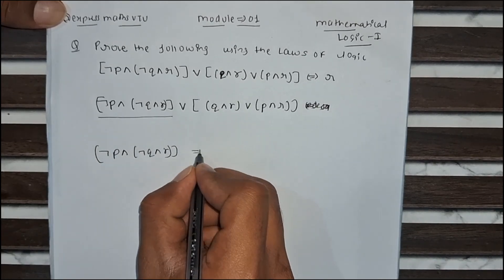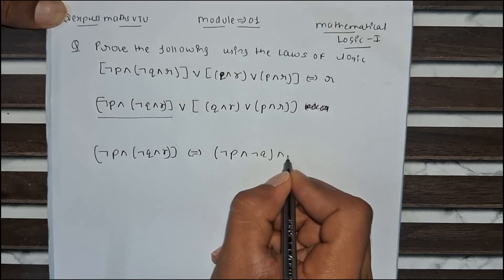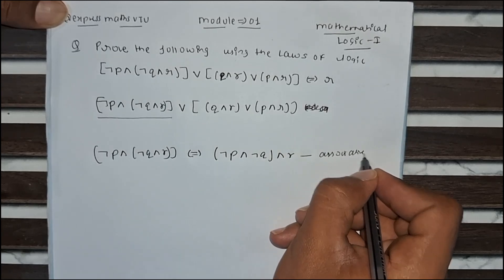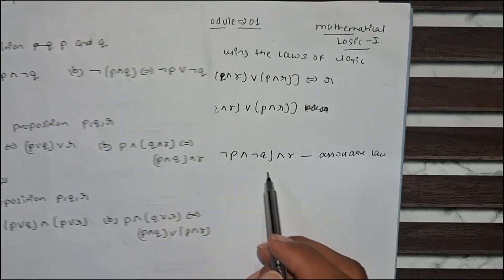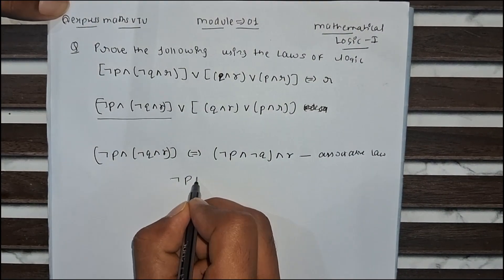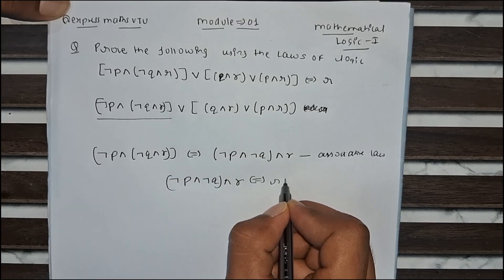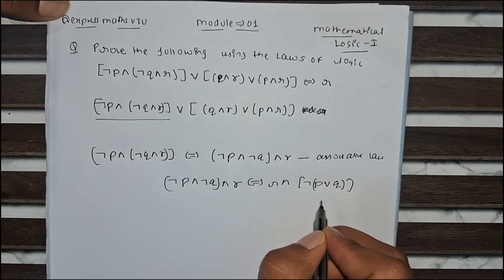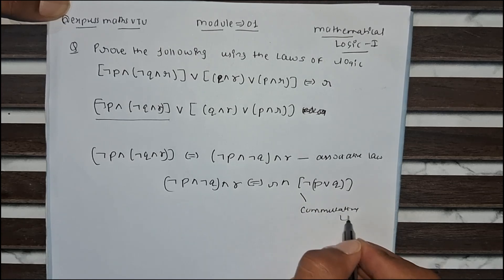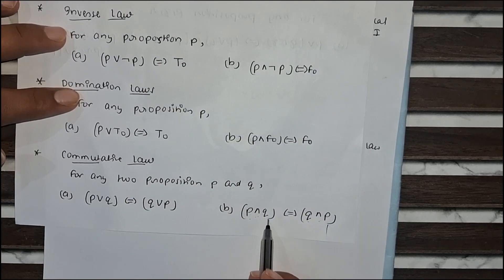This first part is equivalent to negation P conjunction negation Q conjunction R, which comes from the associative law. As you can clearly see, this is our associative law. Now negation P conjunction negation Q, whole conjunction R, which is equivalent to R conjunction negation P disjunction Q. So this is equivalent to Q conjunction negation P. This is our first equation.